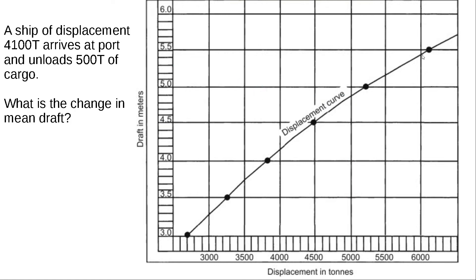The next type of question one can get asked is something like this. A ship of displacement 4,100 tons arrives at port and unloads 500 tons of cargo. What is the change in mean draft?